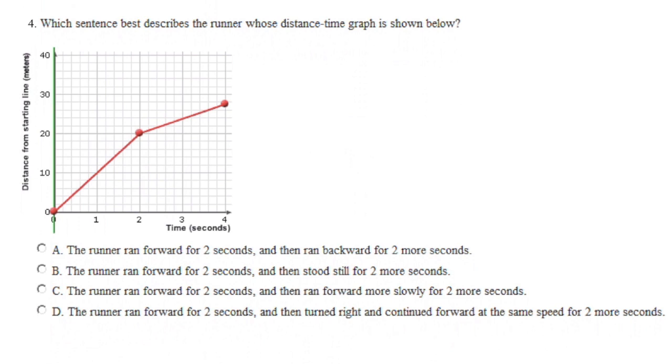And in our last graph, which of these four statements best describes what's happening? So they all begin with the runner running forward for two seconds, so we can see two seconds have passed. The person's going forward. They're not running backward. If they were running backward, they would now switch direction and start coming back to where they began.